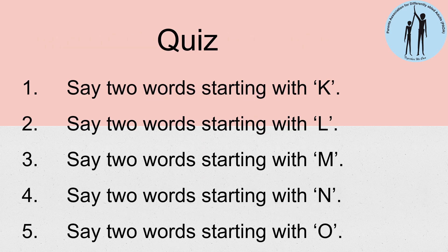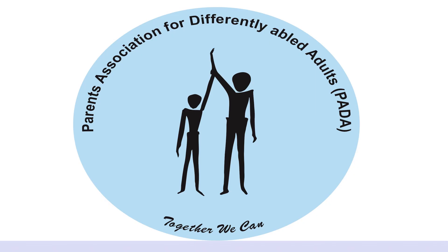Here is a short quiz. Now that we have learnt words, say two words starting with K. Say two words starting with L. Say two words starting with M. Say two words starting with N. And say two words starting with O. This concludes the lesson on these alphabets. We will see more alphabets in the next lesson. Happy learning!